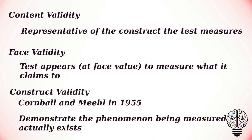Construct validity was invented by Cornwall and Michal in 1955. Construct validity refers to the extent to which a test captures a specific theoretical construct or trait. To test for construct validity, it must be demonstrated that the phenomenon being measured actually exists. For example, the construct validity of a test for intelligence is dependent on a model or theory of intelligence.